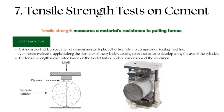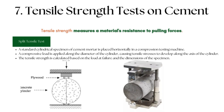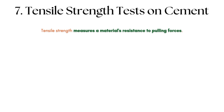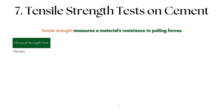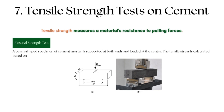Tensile Strength Tests on Cement: While cement is primarily known for its compressive strength, understanding its tensile strength is crucial for various applications. Since there is no direct tensile test for cement, indirect methods are employed. The Split Tensile Test places a standard cylindrical specimen horizontally in a compression testing machine; a compressive load is applied along the diameter, causing tensile stresses along the cylinder's axis, and tensile strength is calculated from the load at failure and specimen dimensions. The Flexural Strength Test uses a beam-shaped specimen supported at both ends and loaded at the center. The typical tensile strength of concrete is between 10% and 15% of its compressive strength.